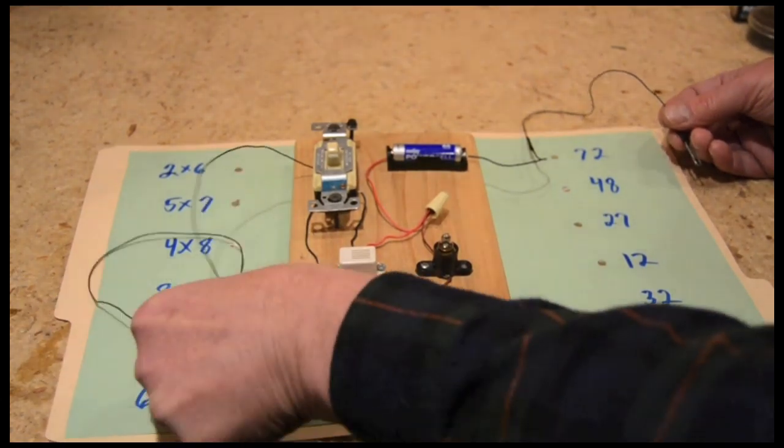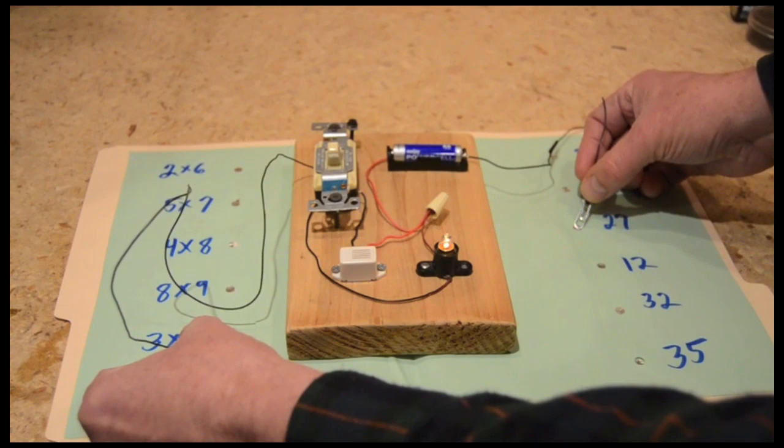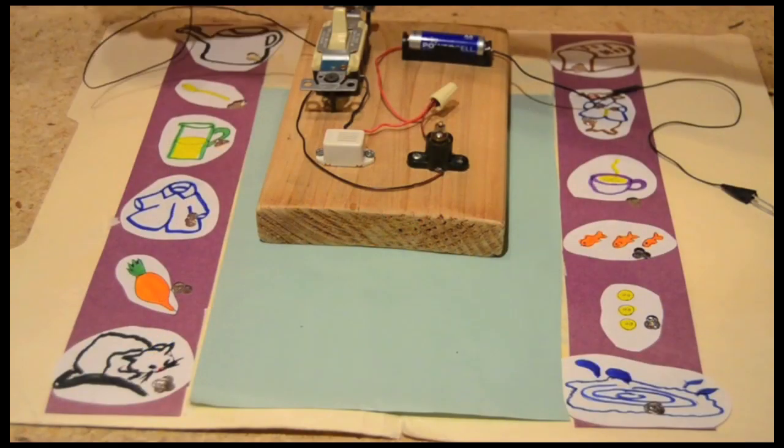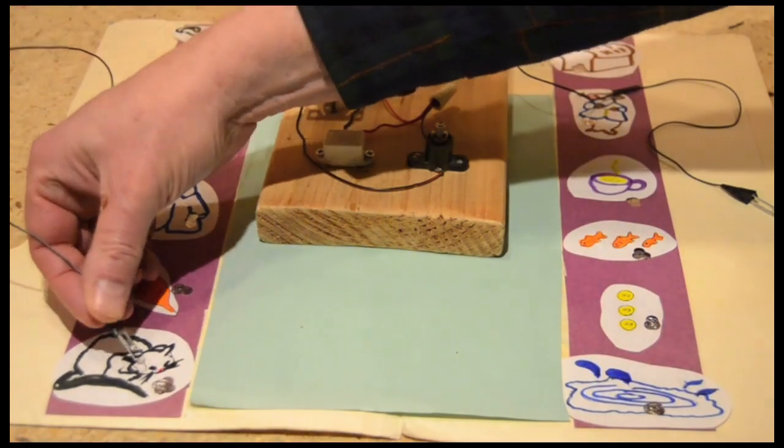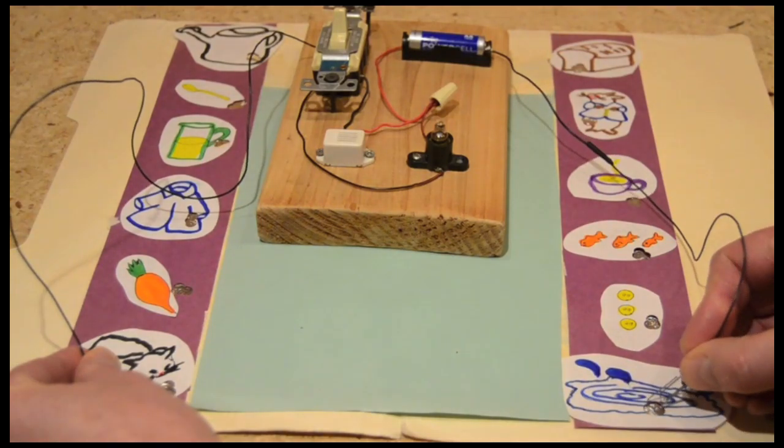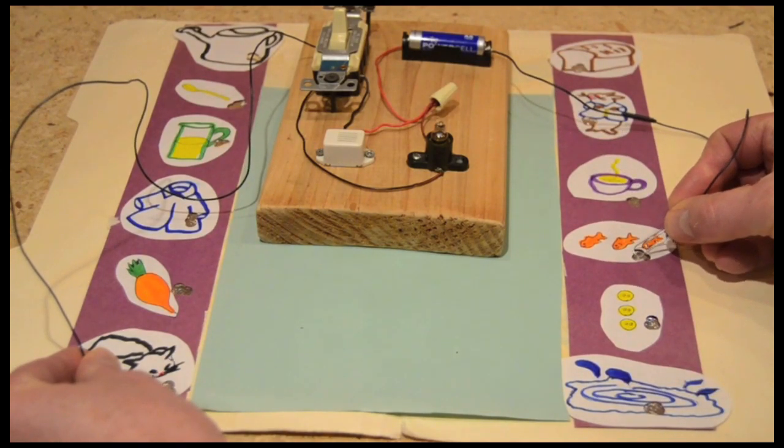Let's see, three times nine, that would be 27. Yes. The light goes off, not 12. Hey, cat likes, hmm, let's see, would a cat like water? No. Buttons? No. Fish? Yes, yes.